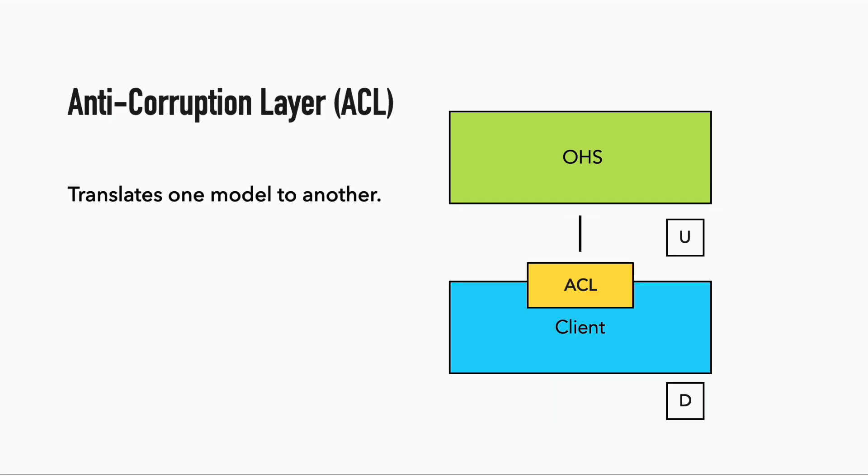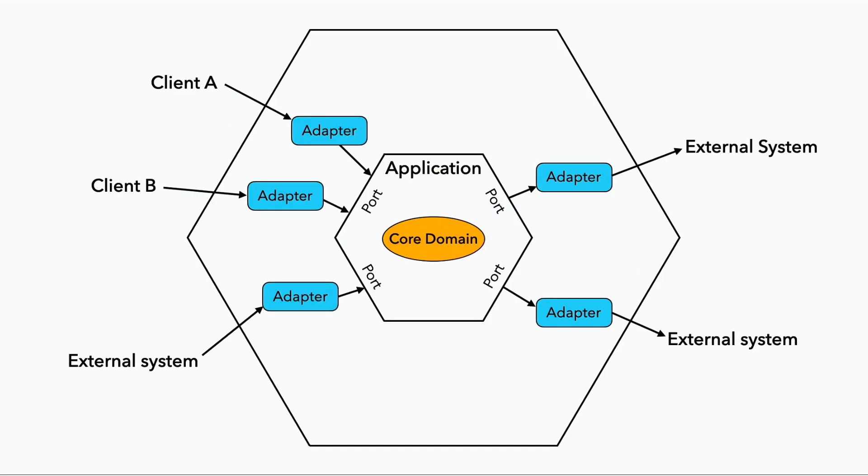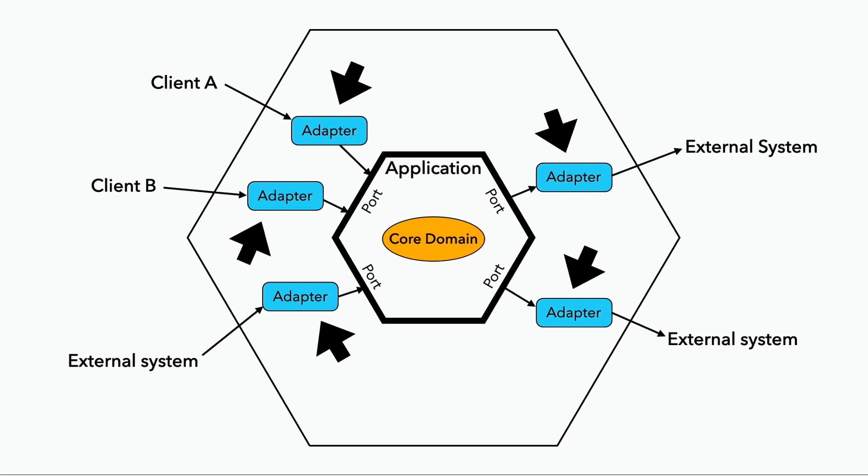So an anti-corruption layer, or ACL, is often deployed in the client application to translate the model from the upstream bounded context or system to the internal model that the client application understands. It reduces the coupling between these two bounded contexts to just this one layer. This idea of an adapter might be familiar from the Hexagonal architecture lecture — the adapters serve as an anti-corruption layer, protecting our core domain logic from changes in the upstream system and allowing us to stay loosely coupled.